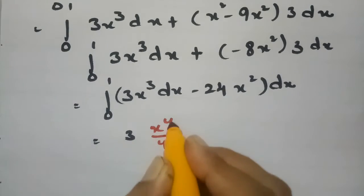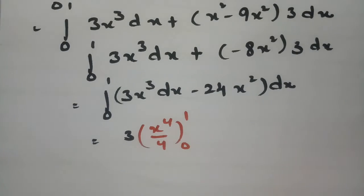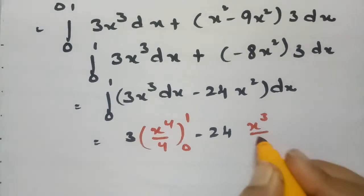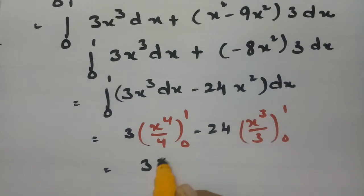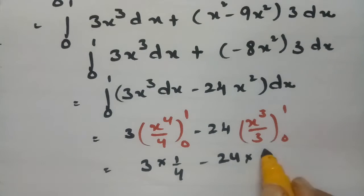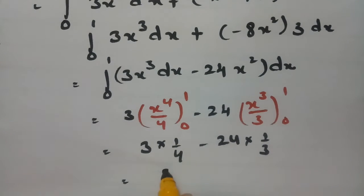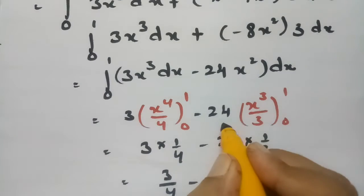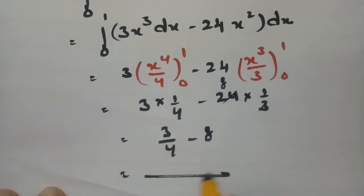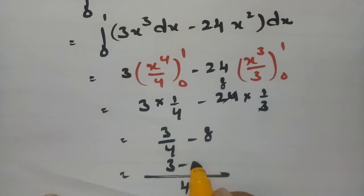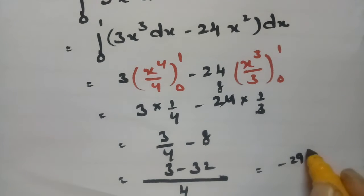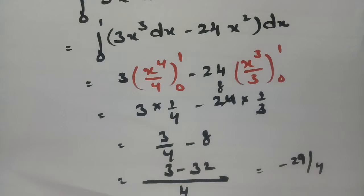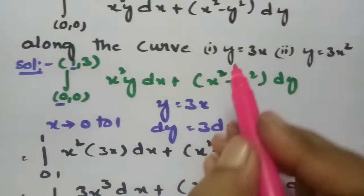Integrating: 3 times x⁴/4 minus 24 times x³/3, evaluated between 0 and 1. Substituting the limits: 3 times 1/4 minus 24 times 1/3, which gives 3/4 minus 8. Taking 4 as LCM: (3 minus 32)/4 equals minus 29/4. That is the answer along the curve y equals 3x.